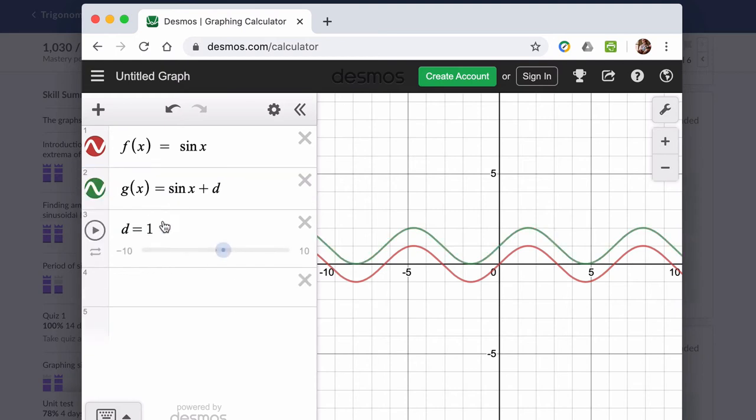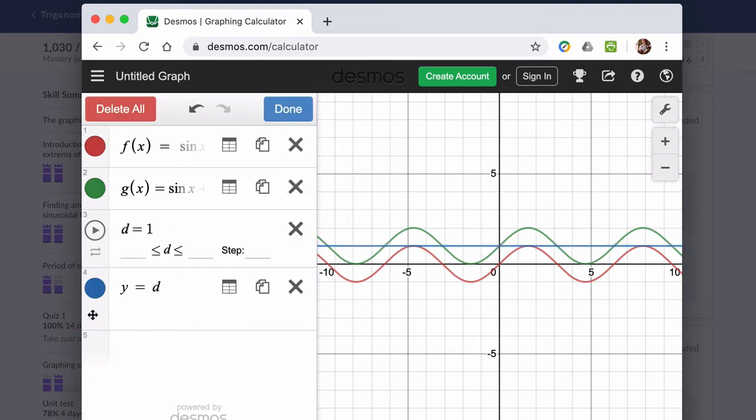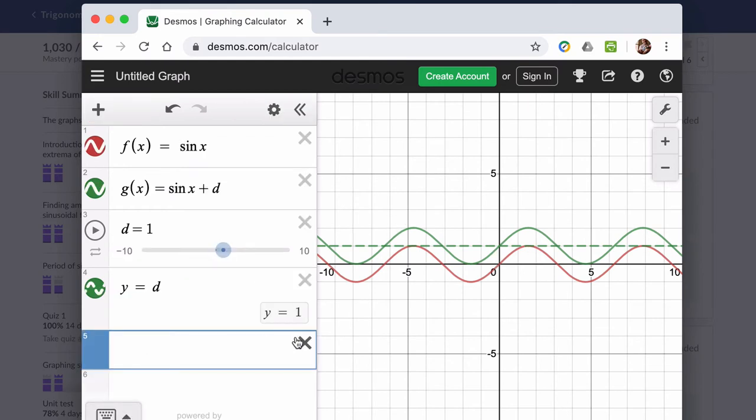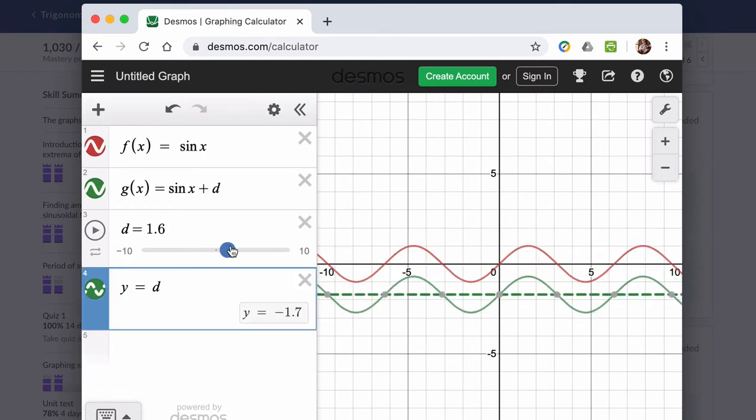Let's make our midline d. And let's just show that line at y equals d. So I'm going to change a couple of things here. I want the midline to match the color of the function g. I want it to be dashed. There's my midline. And I'm just going to move this function up and down.